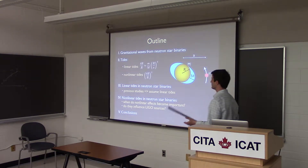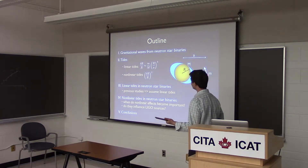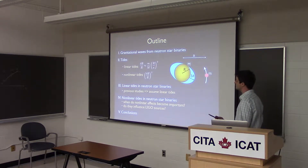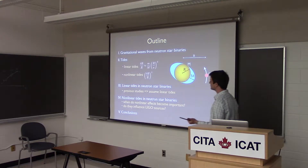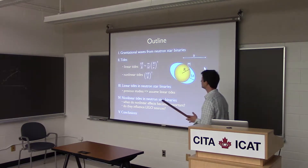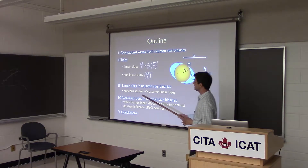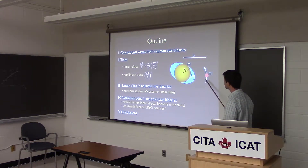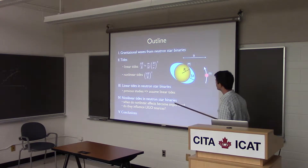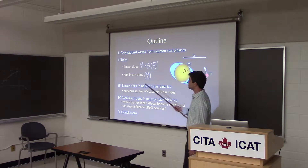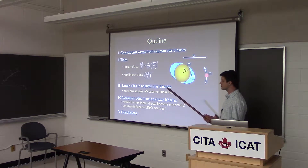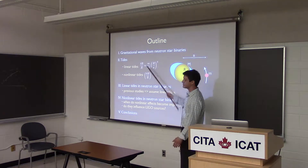The question I'm interested in is: how important are tides in these systems, and to what extent do they modify the inspiral compared to the point-mass assumption? I'll start with a broad overview of gravitational waves in the context of neutron star binaries, and then talk about tides in a general sense — beginning with linear tides.